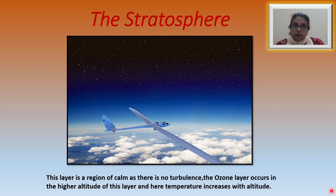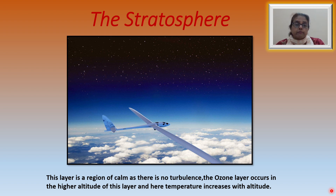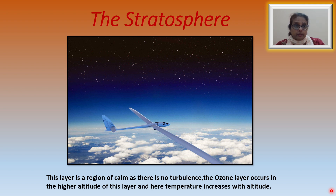Airplanes in the troposphere also release the same kind of smoke, but we normally do not see it. This is mainly because of the turbulence found in the troposphere, which disperses the trail. Hence, we do not see the trail of smoke left behind by jets flying high up in the stratosphere.